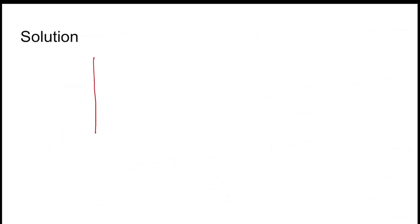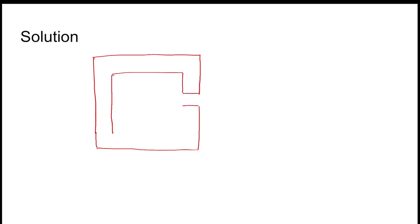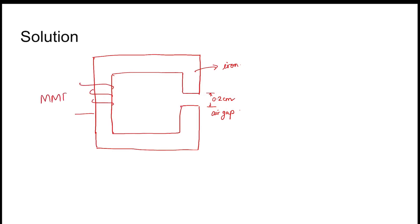Coming to the solution: the situation here is somewhat different. In the transformer, a core is there but a small cut is given in the core, which is 0.2 cm in length. This air gap is introduced and the remaining is iron. Let the MMF be NI.